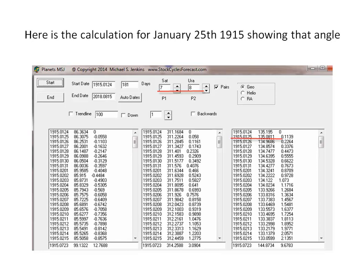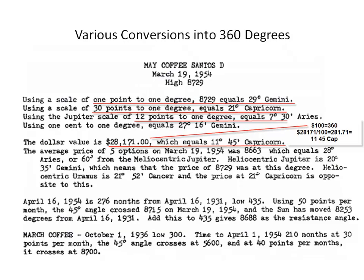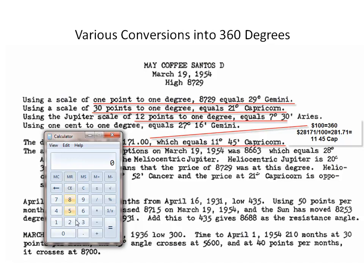Here's a letter of Gann's on the May Santa Domingo coffee, showing you don't always use a 1-to-1 point conversion. Here we have a simple 1-to-1 degree conversion. He's using coffee prices in pennies — 87.29 divided by 360 gives 24 cycles of 360. We're not worried about each 360; we subtract those 24 cycles and keep the leftover. The leftover of 360 is equivalent to 89 degrees, and 89 equals 29 Gemini — so 30 Aries, 30 Taurus equals 60, plus 29 over, so 29 Gemini is equal to 1.21 degrees in the price of coffee.